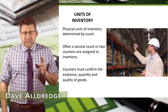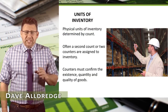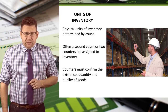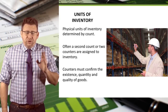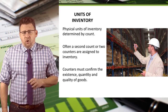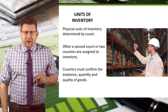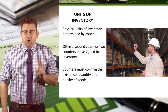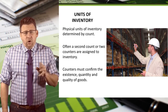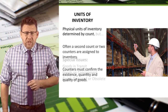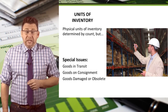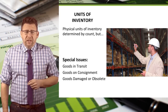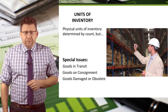The quantity of inventory is determined by physically counting it. There are a number of ways to do this, but often either two separate counts are done or two people counting together. The purpose of this is to ensure the existence, quantity, and quality of the goods. But there are some special issues we need to be familiar with when it comes to determining the physical quantity of inventory.